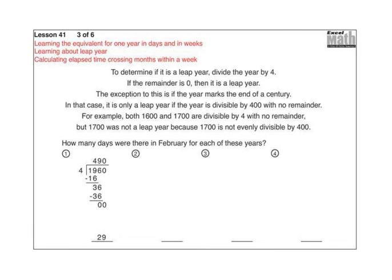To determine if it is a leap year, divide the year by four. If the remainder is zero, then it is a leap year. The exception to this is the year that marks the end of a century. In that case, it is only a leap year if the year is divisible by 400 with no remainder. For example, both 1,600 and 1,700 are divisible by four with no remainder, but 1,700 was not a leap year because 1,700 is not evenly divisible by 400.